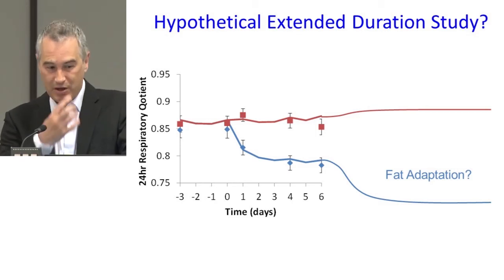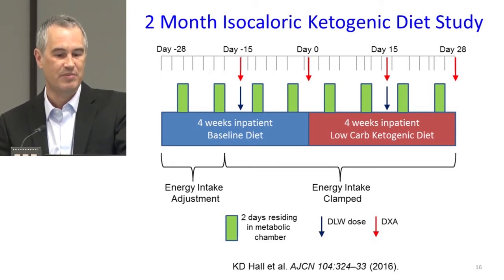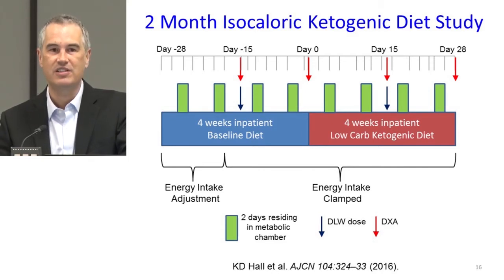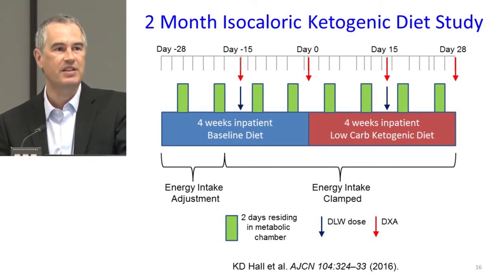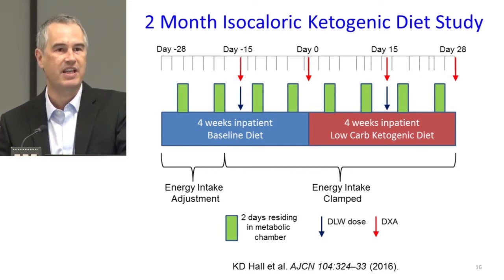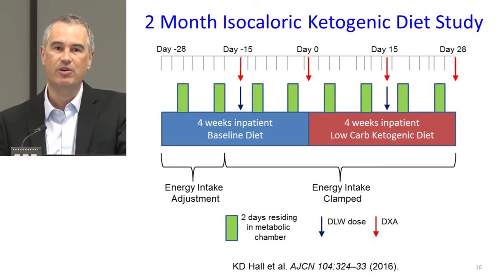However, we did do another study — a two-month isocaloric ketogenic diet study. After a four-week inpatient period with a high-carbohydrate, high-sugar diet, where we matched energy intake to what people were burning inside metabolic chambers, we switched them — keeping calories constant — to a 5% carbohydrate, 80% fat diet, keeping protein and calories the same. We asked: what happens to energy expenditure when you put people on a very, very low-carbohydrate diet but keep calories and protein the same?